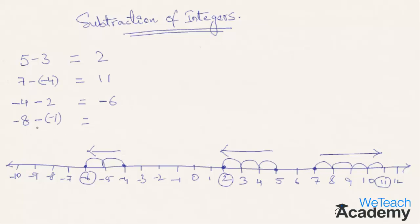Now since we are subtracting a negative number, you need to move towards the right. In this example, -8-(-1): you need to first mark -8 and then move one step towards the right. Hence the answer is -8-(-1) equals -7.